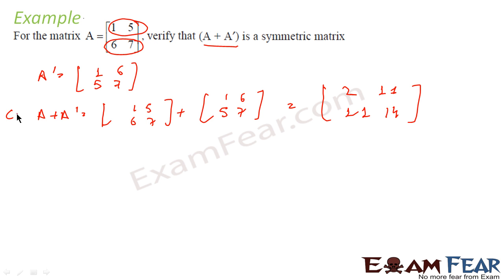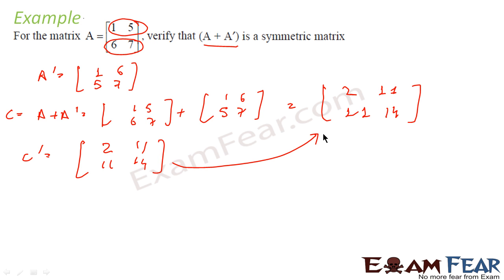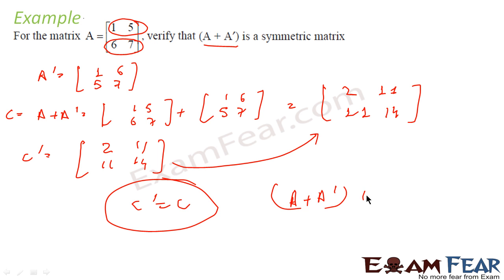Just to formally verify, let us call C equal to A plus A dash and find C transpose. Converting rows to columns, C transpose becomes [2, 11; 11, 14], which is exactly the same as C. Since C dash and C are exactly the same, I can say C is a symmetric matrix, and C is nothing but A plus A dash. So A plus A dash is a symmetric matrix.